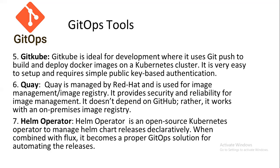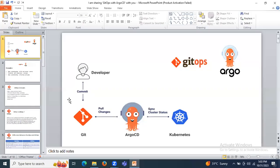In this session we have learned what GitOps is, why we need GitOps, the GitOps tools, the benefits and advantages of GitOps, and the difference between GitOps and DevOps. The seven GitOps tools covered are: Flux, Argo CD, Jenkins X, WKCTL, Gitkube, Quay, and Helm Operator. That's the small introduction to GitOps.